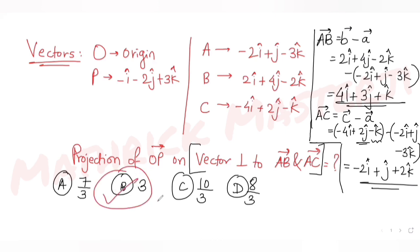This matches option B, so B is the correct answer. To summarize: we found vector AB, then vector AC, found the vector D perpendicular to both using the cross product, and then found the projection of OP on D. The answer is 3, matching option B. I'll see you tomorrow with another question from JEE Mains.